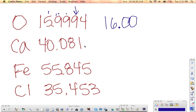40.081 to two decimal places. We go one, two, round according to that guy. This one tells me to keep that number just as it is. So to two decimal places, calcium is 40.08.